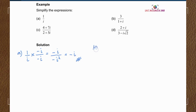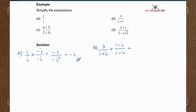For Example B: 3 over 1 plus i. In order to eliminate the 1 plus i in the denominator, we need to multiply by the conjugate of 1 plus i, which is 1 minus i. For the numerator, we also multiply by 1 minus i. So for the numerator we have 3 minus 3i.